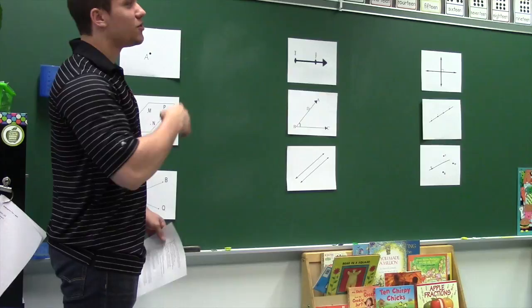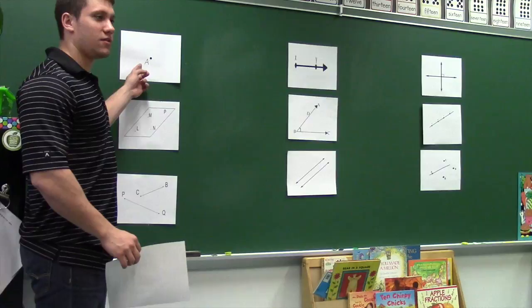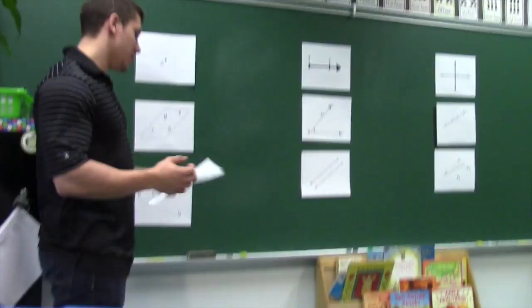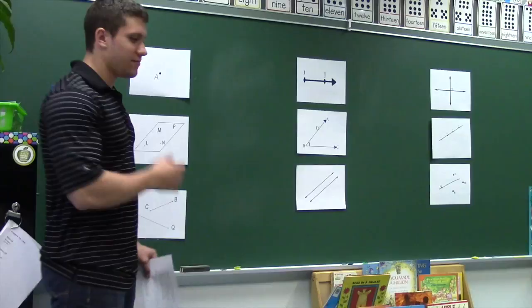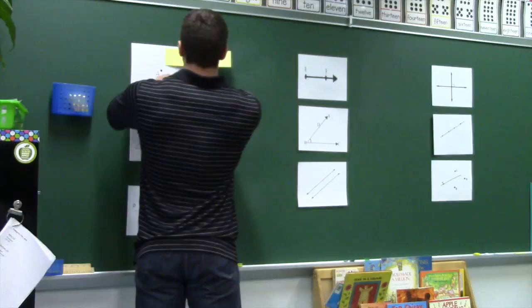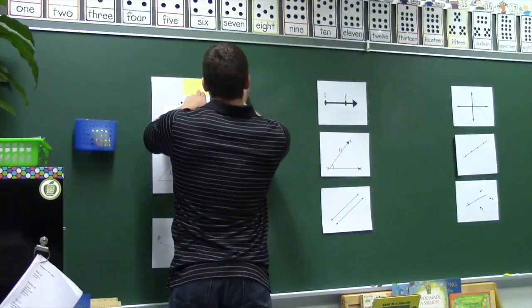So who can tell me what this first one is? It's a point. And what a point is — it represents a location. Where is that location? Where does that point live? It lives in what we call a plane. It can live in the plane.